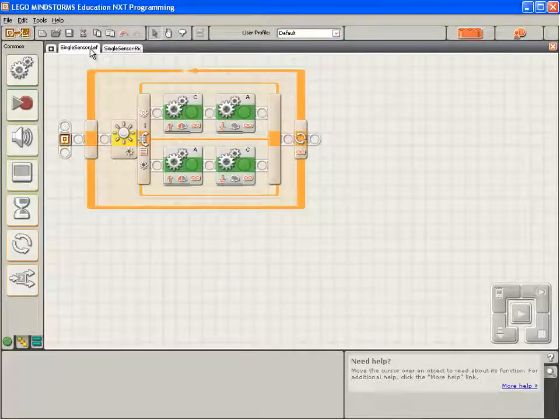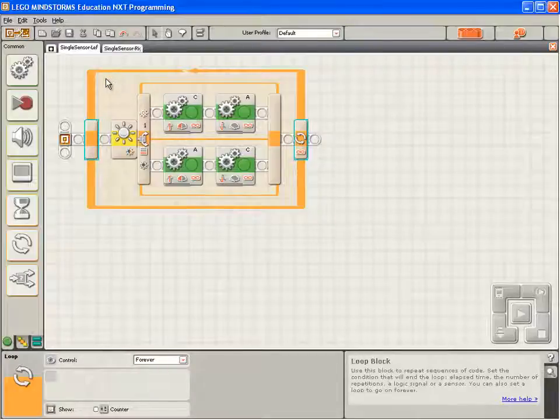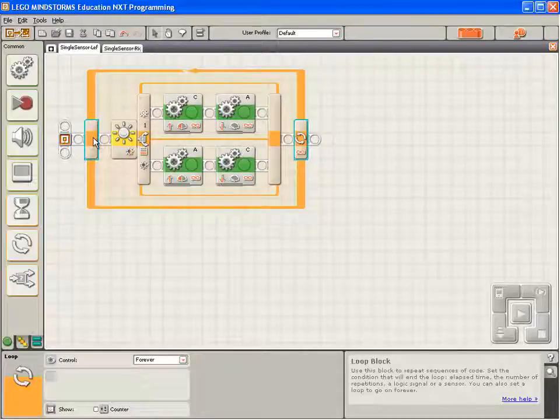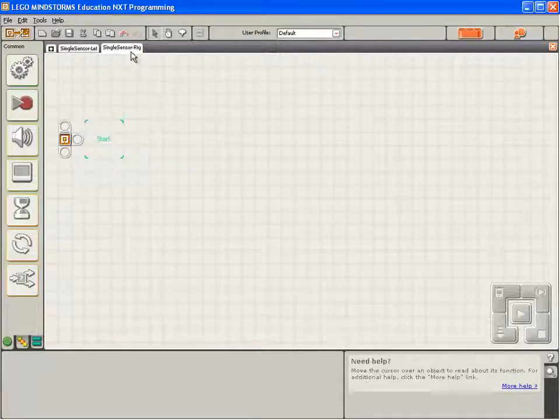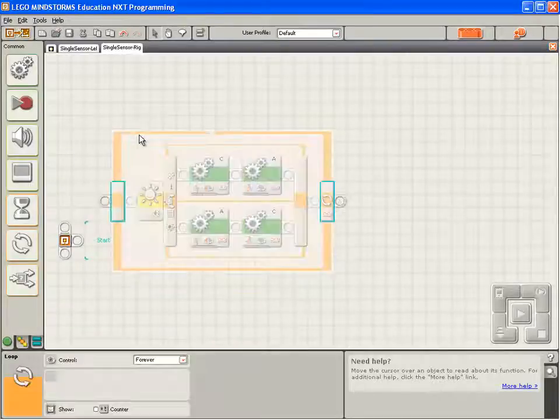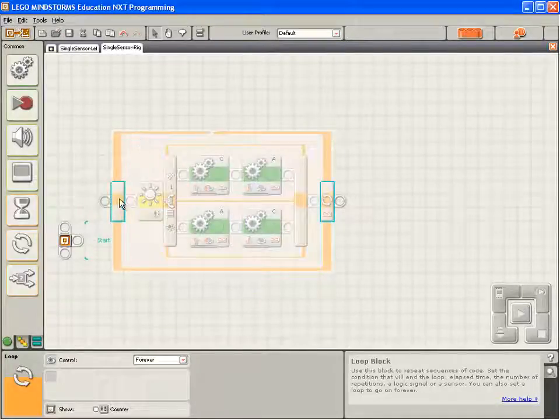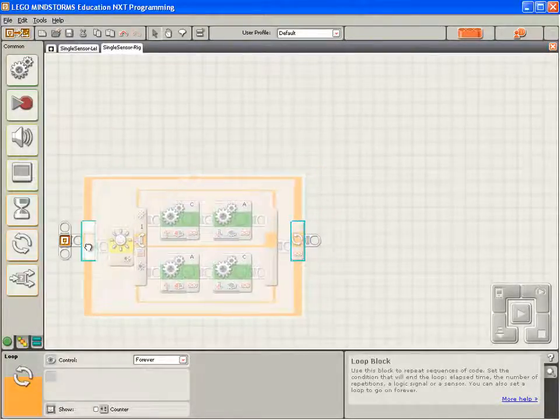Now, this is easy to write. We're going to copy the code from the single sensor left. So, I select the outside loop block, copy it to the clipboard with control C, come over to our single sensor right program, paste it in with control V, and drop it onto the sequence beam.